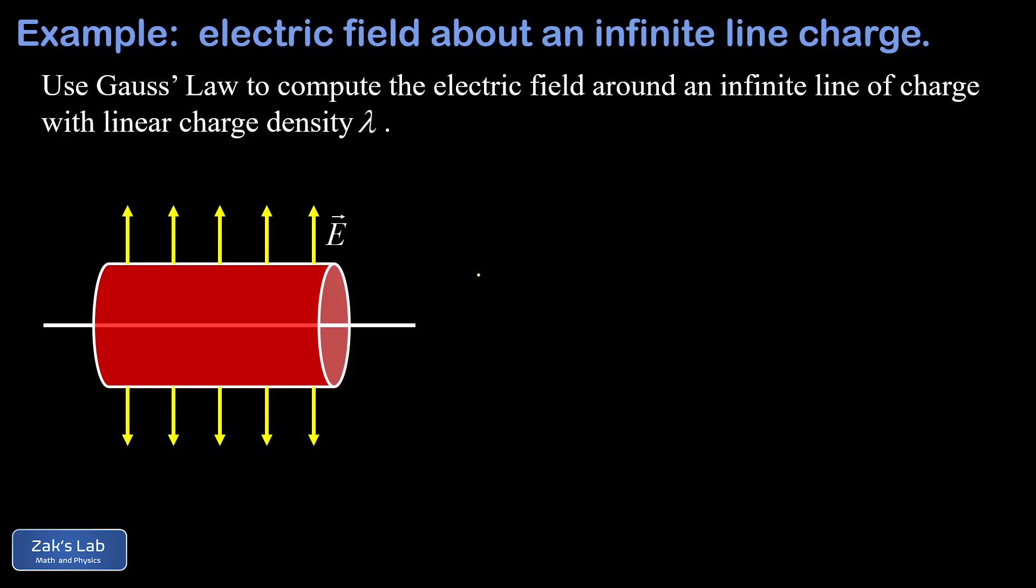So we'll label things up a little before we apply Gauss's law. We're going to say the length of this cylinder is l and its radius is little r.